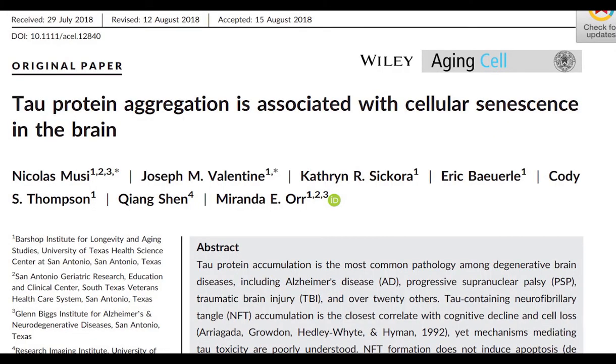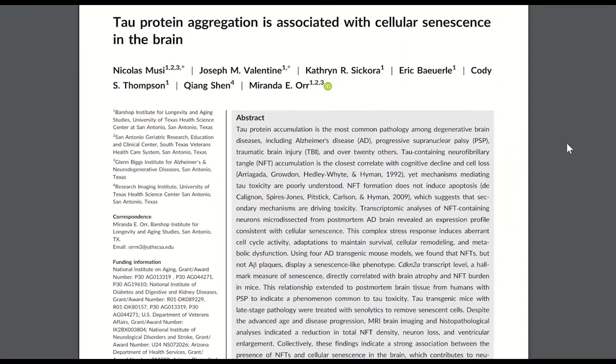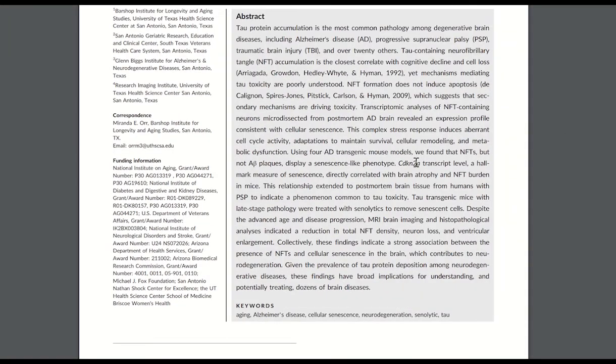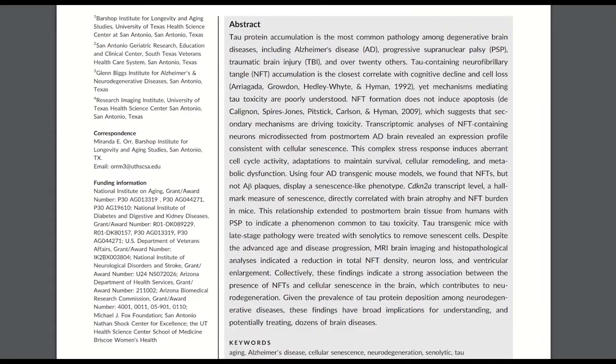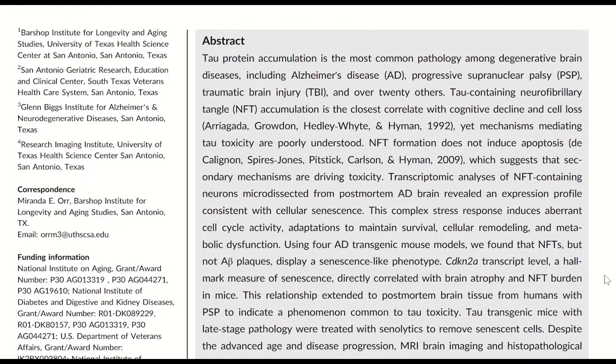Similar results were seen within the second 2018 paper 'Tau protein aggregation is associated with cellular senescence in the brain.' They used different Alzheimer's disease transgenic mouse models and found that the presence of neurofibrillary tau tangles but not the amyloid beta plaques display a senescence-like phenotype.